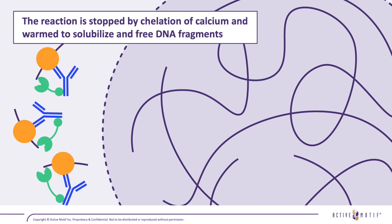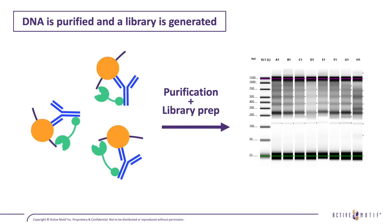The nuclease cuts the DNA proximal to the target location and frees those regions from the genome. The reaction is stopped by chelating the calcium, and samples are warmed to 37 degrees so that the small fragments can diffuse back out into solution. The DNA from the supernatant is then purified, a library prep is done, and the sample proceeds to sequencing and genomic analysis.